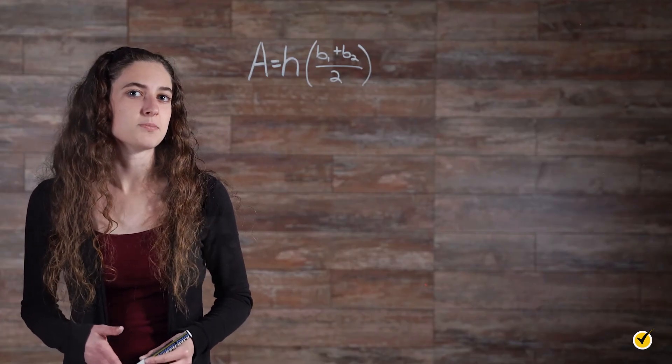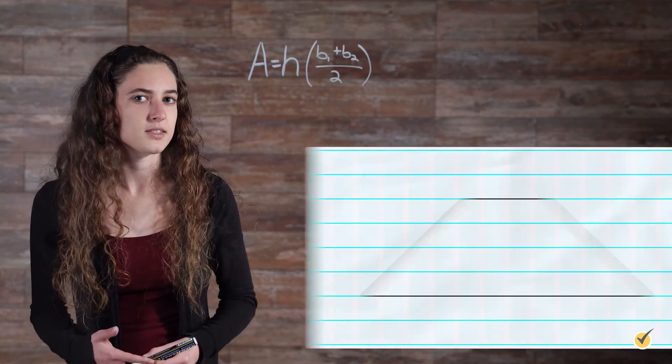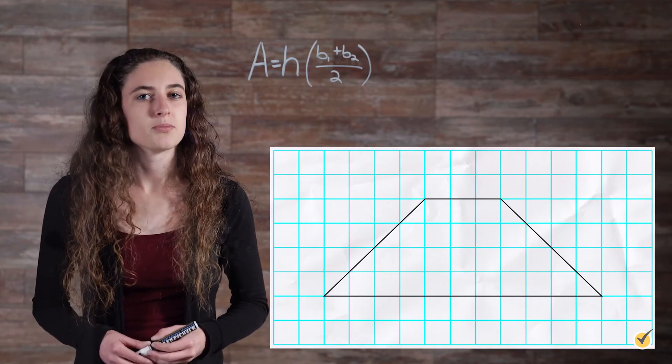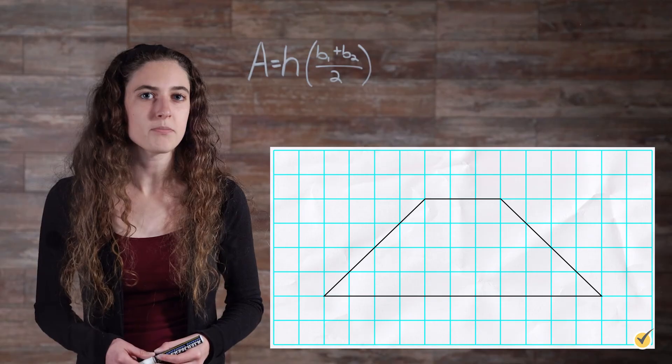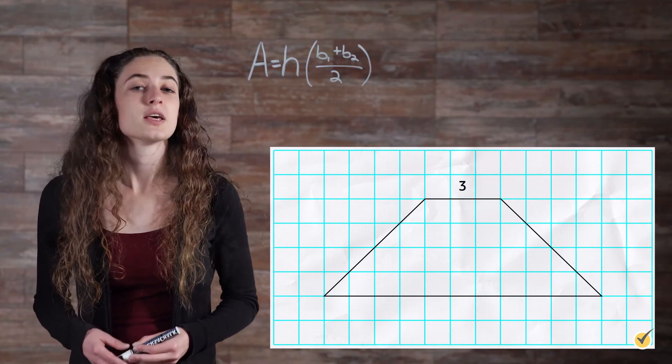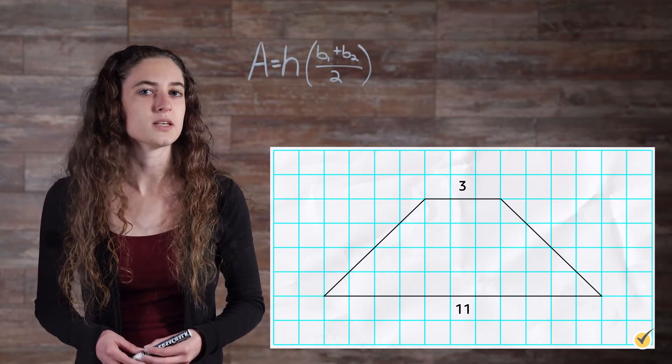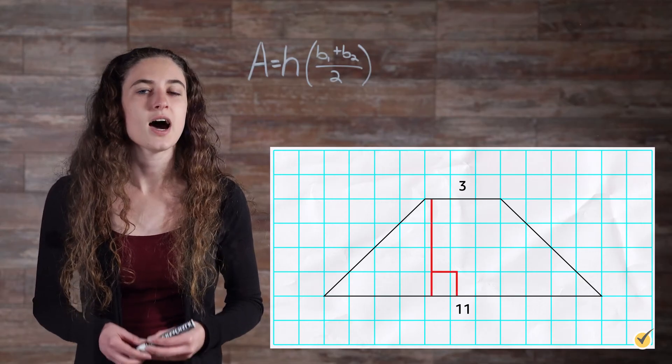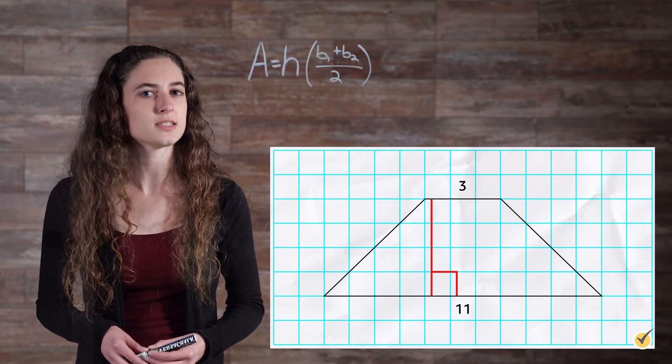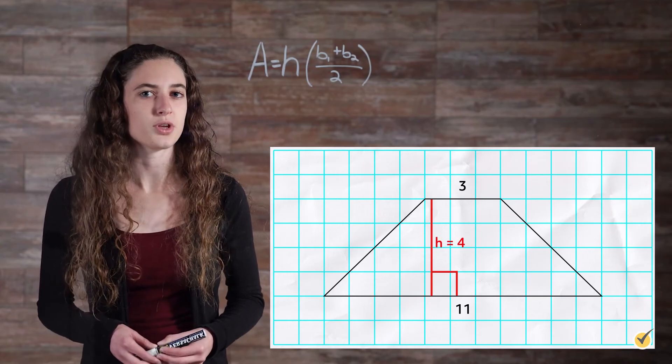Note that dividing the sum of the bases by two is the average of those lengths. Because our sample problem is on a graph, we can see that the top base, which we'll call base one, is three units long. Our bottom base, base two, is 11 units long. And the height of the trapezoid, which is the distance between the bases, is 4 units.